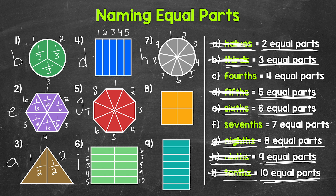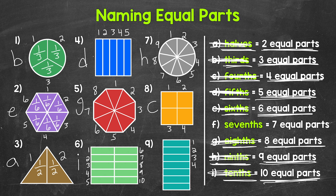Next for number eight, we have a square here — that's our whole — and this square has been divided into one, two, three, four equal parts. Four equal parts we call fourths. So let's put a C next to number eight and cross off fourths. Each one of those equal parts is one fourth of the whole. And then lastly, number nine, we have a whole that has been divided into one, two, three, four, five, six, seven equal parts. We call seven equal parts sevenths. So let's put an F next to number nine and cross off sevenths. Each one of those equal parts is one seventh of the whole.